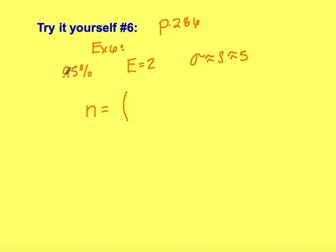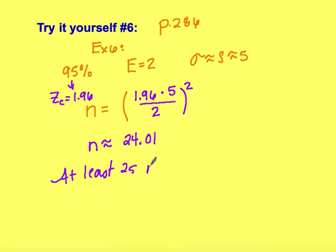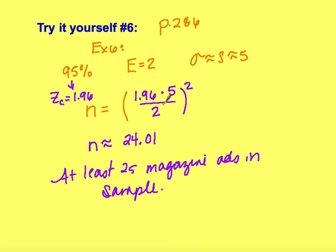With a 95% confidence rate, Z sub C is 1.96. We calculate N equals (1.96 times 5 divided by 2) squared, which gives approximately 24.01. We don't want to round down to 24 because that wouldn't be enough, so we round up and say we would need at least 25 magazine ads in our sample to ensure an error within two sentences of the actual mean.